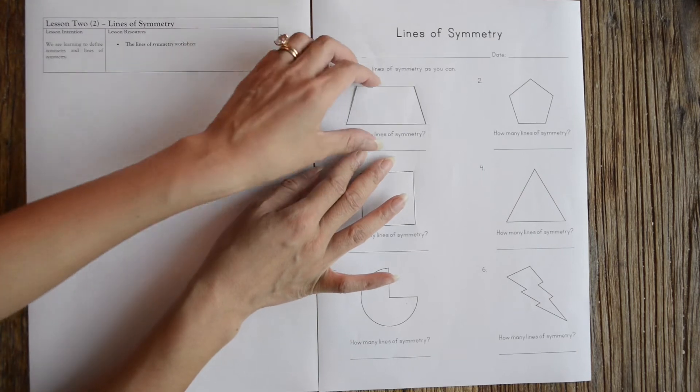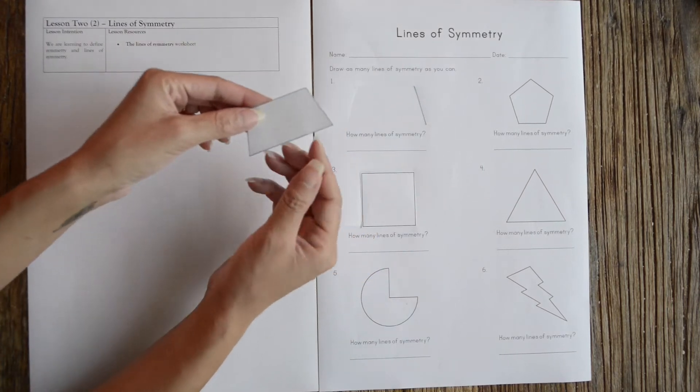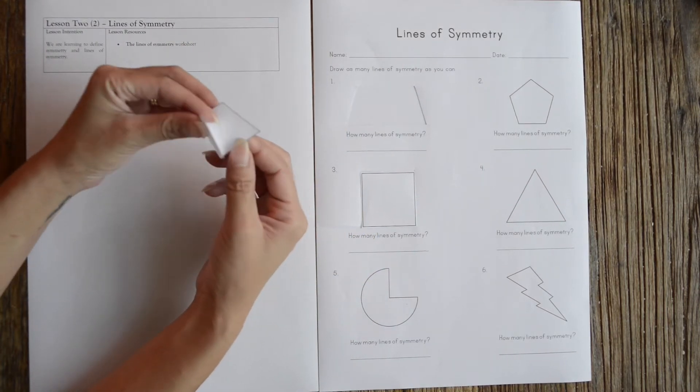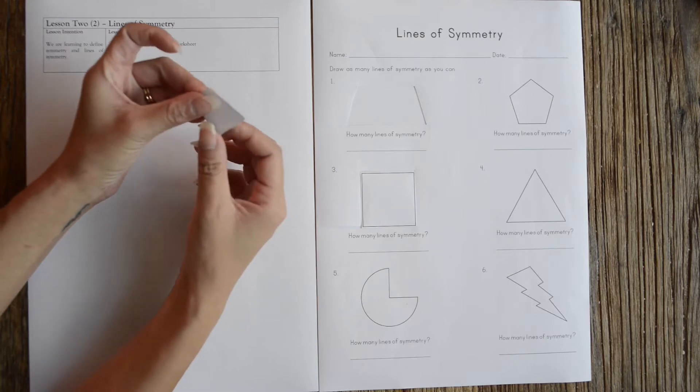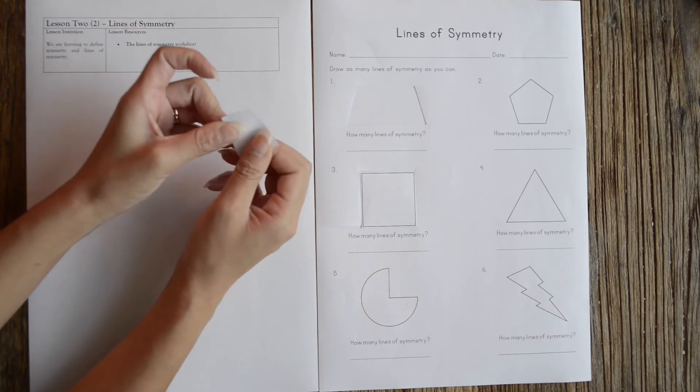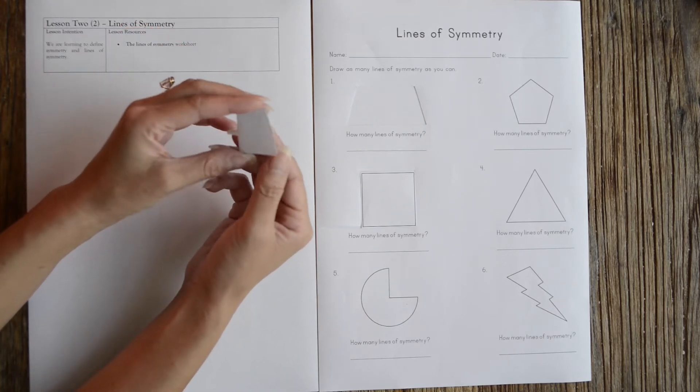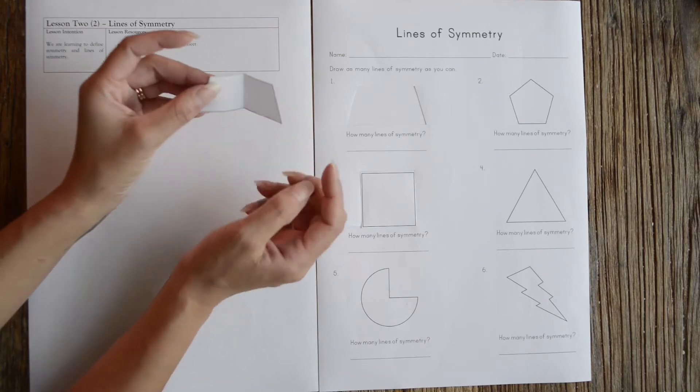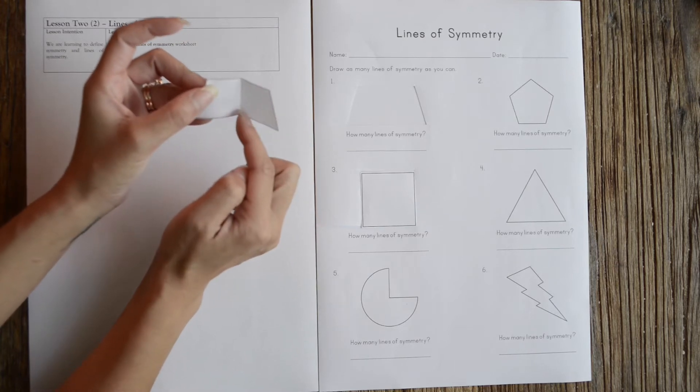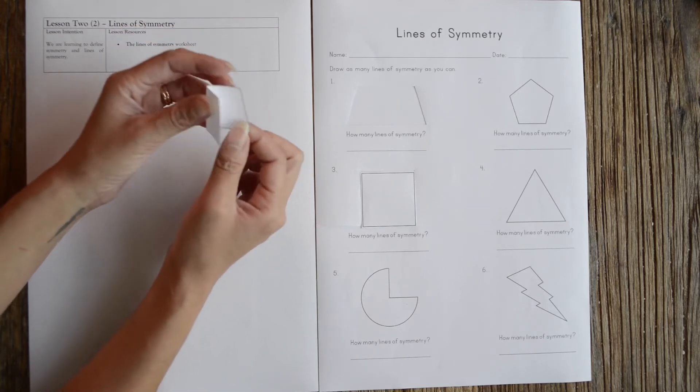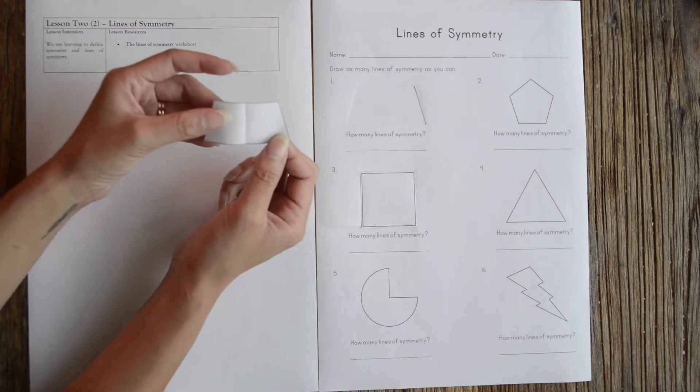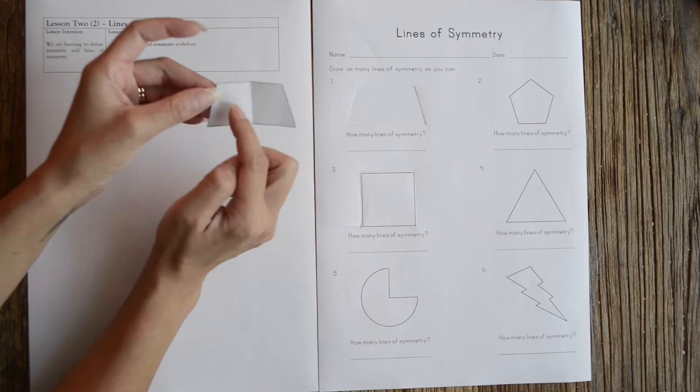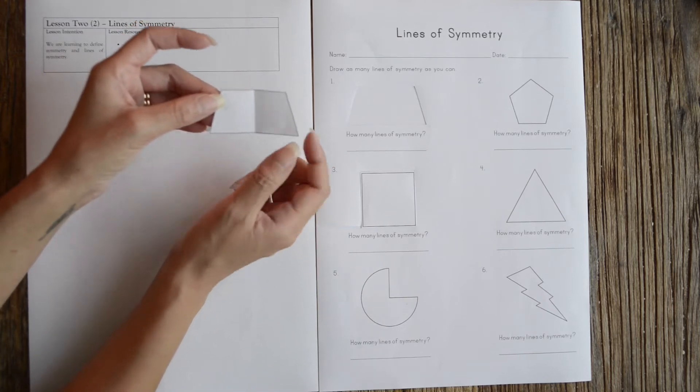I've got here a trapezium and I've actually cut it out. When I fold this in half, you see how the two sides match up. This side is the mirror side of the other side, and the line of symmetry is that line in the middle that tells me where I can fold it to create mirror shapes of that same object.